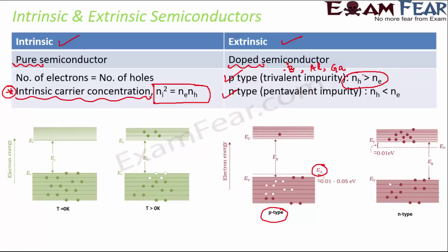In N-type semiconductors, a pentavalent impurity is added — an atom with valency five. Examples include phosphorus and arsenic. Four of the five valence electrons combine with the semiconductor's four, leaving one extra electron. This creates a donor energy level very near to the conduction band. In N-type, the number of electrons is greater than the number of holes. So P-type means more holes and N-type means more electrons.